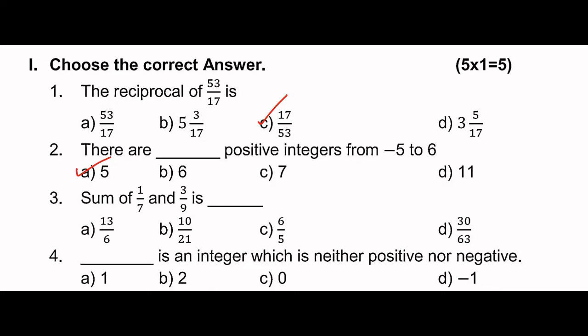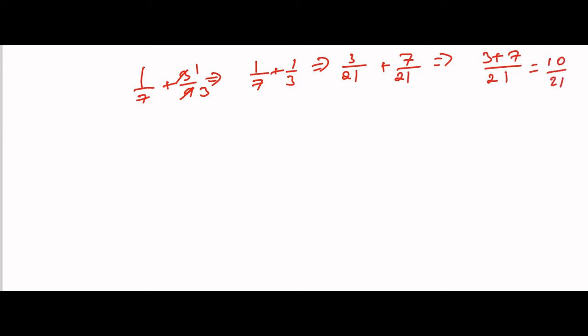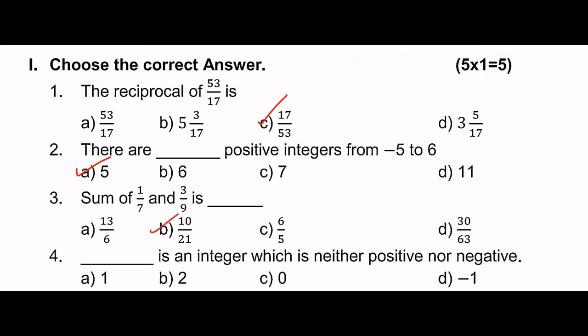Third question: Sum of 1 by 7 and 3 by 9. So 1 by 7 plus 3 by 9. We can simplify 3 by 9 - cancel to get 1 by 3. So 1 by 7 plus 1 by 3. Cross multiply: 3 into 1 is 3, 3 into 7 is 21, then 7 into 1 is 7, 7 into 3 is 21. So 3 plus 7 divided by 21 equals 10 by 21. Answer is 10 by 21.